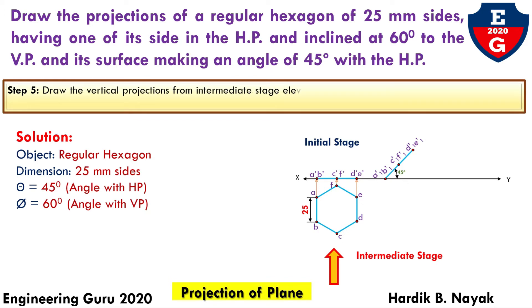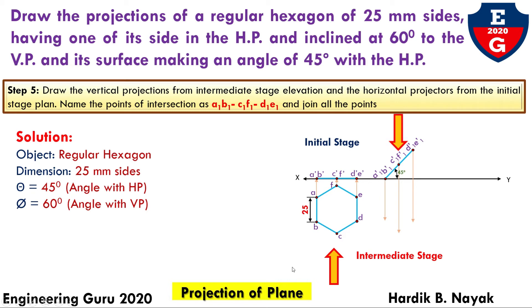Now, let us take a look at the inclined regular hexagon from the top. Draw the vertical projections through all the intermediate elevation and horizontal projectors from the initial stage, from F, AE, B, D, and C. Name the intersect points A1, B1, C1, D1, F1, and join all the points.